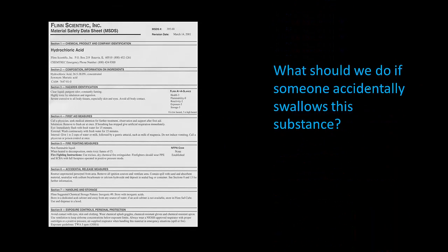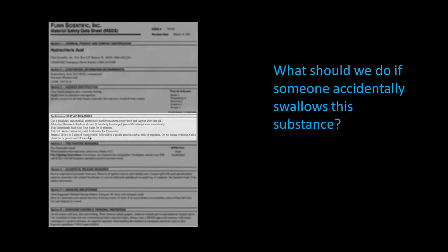What should we do if someone accidentally swallows this substance? Look under first aid measures — under 'internal' (meaning swallowed): give 1 to 2 cups of water or milk, followed by gastric antacids such as milk of magnesia. Do not induce vomiting, and call a physician or poison control at once.